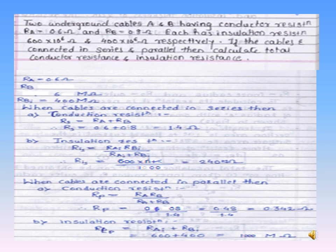If the cables are connected in parallel, the insulation resistance = 600 + 400 = 1000 MΩ, and the conductor resistance = (0.6 × 0.8) / (0.6 + 0.8) Ω. These are the important things to remember for numericals on cables connected in series and parallel.